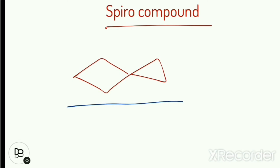Now we will learn Spiro compounds. What is a Spiro compound? Look at this structure — an organic compound with two ring systems, ring A and ring B, fused together by just one single carbon atom. Whenever only one carbon atom joins two ring systems, that is known as a Spiro compound. In Bicyclic compounds there are two joining carbons known as BHC, but in Spiro compounds there is only one joining carbon in the middle.